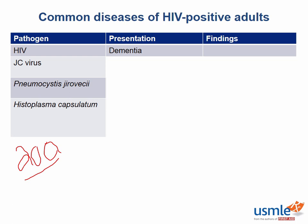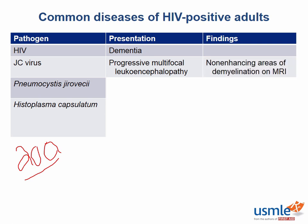The JC virus can lead to progressive multifocal leukoencephalopathy, a central nervous system demyelinating disease. The virus infects and destroys all the oligodendrocytes, the cells responsible for making myelin in the central nervous system. This is usually a fatal disease, diagnosed by MRI which shows non-enhancing areas of demyelination diffusely throughout the central nervous system. The JC virus is a polyomavirus, one of the non-enveloped DNA viruses.